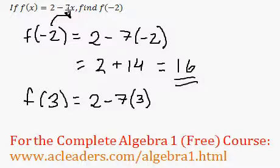Because it's negative 7x, and the negative 7 is multiplying the x, so negative 7 times 3.